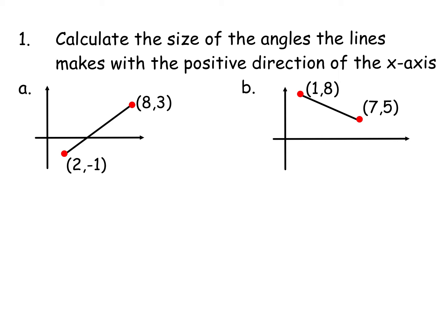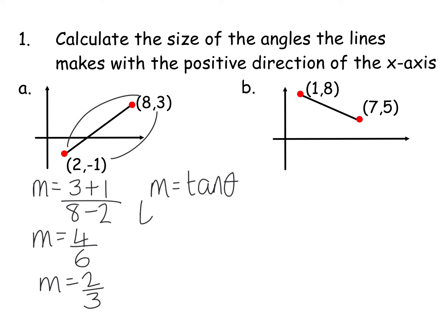So if we have a look at the first one, what we're going to do first of all is get the gradient of this line. So we're going to do gradient equals y2 minus y1, so I'm going to do 3 minus minus 1, so 3 plus 1, and 8 minus 2, which gives us 4 over 6. So our gradient is 2 thirds. Now, if we can then plug this into the formula, m equals tan theta, we can say that 2 thirds equals tan theta, or flip it if you like to be this way around, and say tan theta equals 2 thirds.